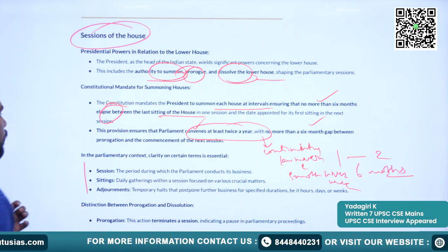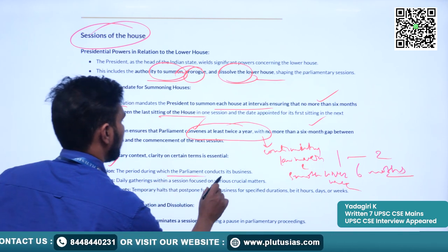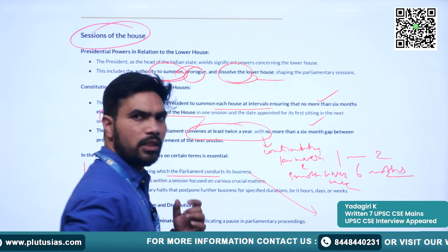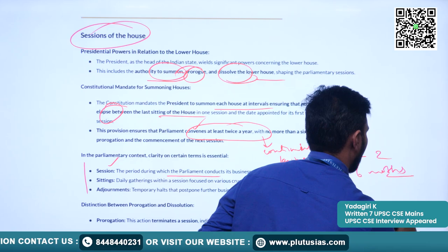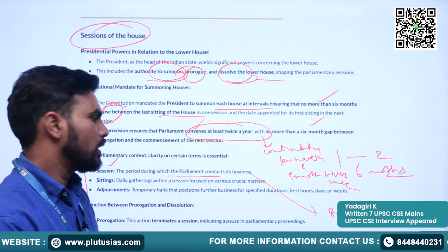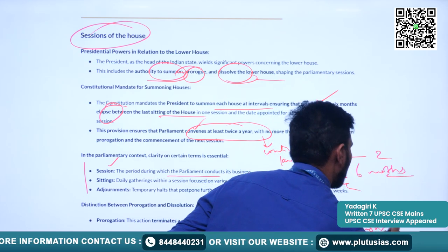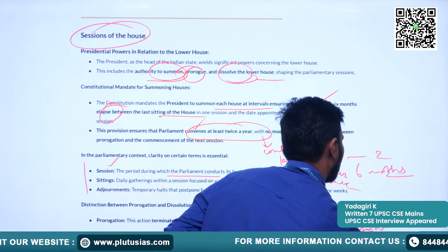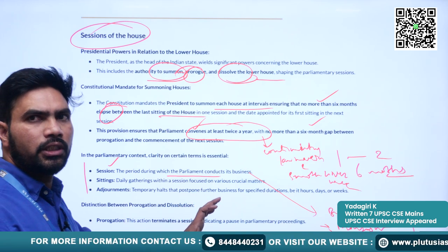Let us understand some definitions. A session is the period during which Parliament conducts its business. Generally we have three sessions. The first one is the budget session, which occurs during February, March, and April — budgetary business has to be overseen here. The second one is the monsoon session. And the third one is the winter session.